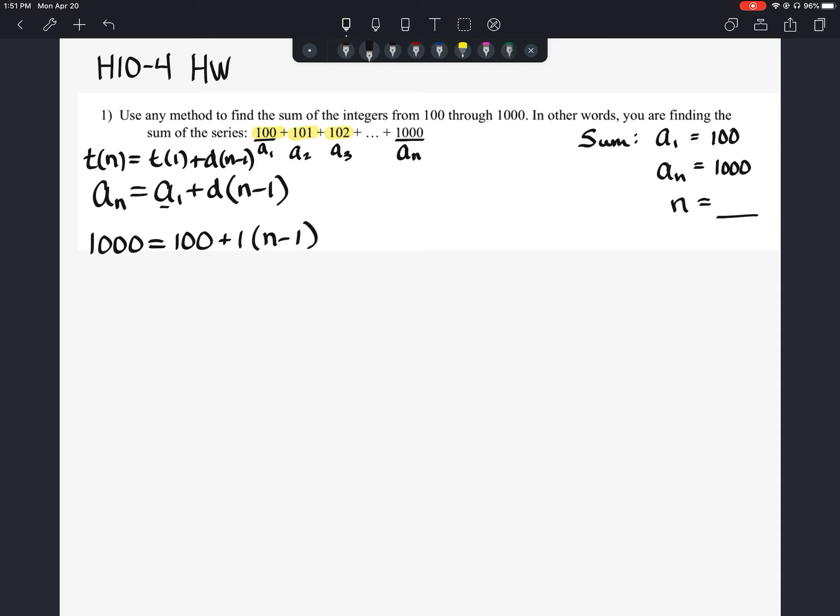Now we are down to just one variable and we can solve to find this. Now if I took this 1 and I distributed it through, it's not really going to change much there because it's a positive 1. So what we now have is 100 plus 1 times n is n, and 1 times negative 1 is negative 1.